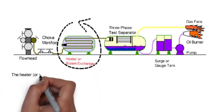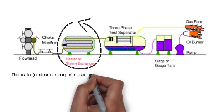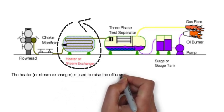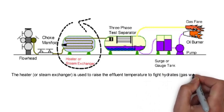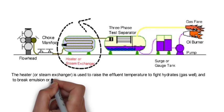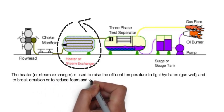The heater or steam exchanger is used to raise the effluent temperature to fight hydrates in the gas well and to break emulsion or to reduce foam and viscosity in the oil well and improve burning.